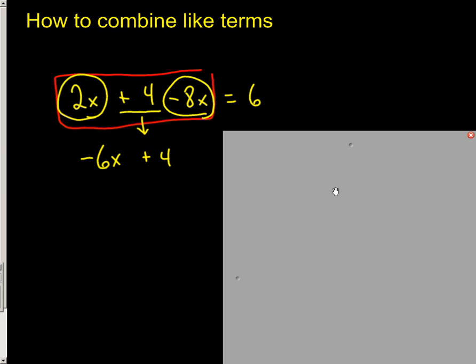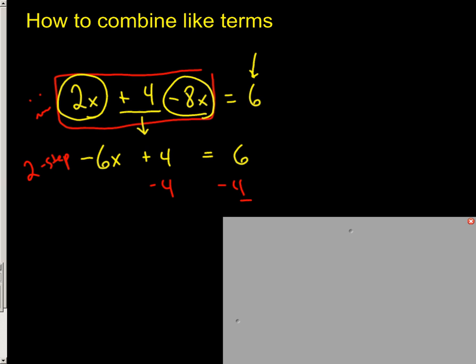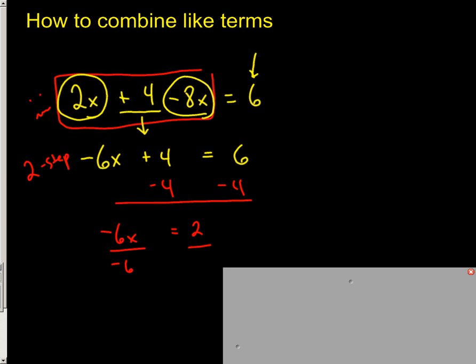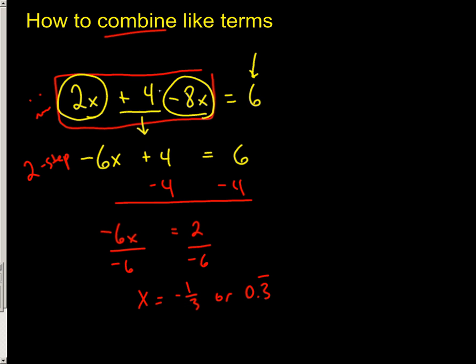Then we look over at the right side of the equation. There's nothing else to combine, so I just pull it straight down. That's the beauty of combining like terms. It takes something that looks kind of scary and it gets you into this two-step equation world pretty quick because here I can just solve and say minus 4, minus 4, negative 6x equals 2. And then I can just divide by negative 6 on both sides. And even though it's a fraction, it simplifies down to negative 1 third or 0.3 repeating. It's a pretty easy equation there. But this is why we want to combine like terms.